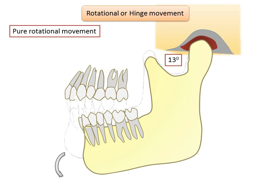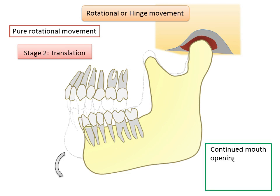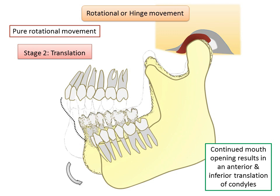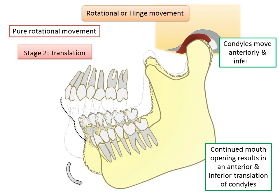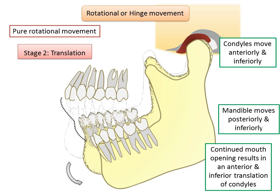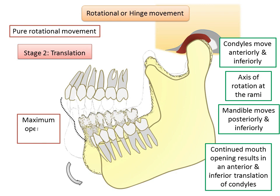In the second stage, the translational stage, the condyles translate through the axis of rotation of the mandible. During this stage, the condyles move anteriorly and inferiorly while the mandible moves posteriorly and inferiorly. The axis of rotation shifts to the bodies of rami, likely the area of attachment of the sphenomandibular ligament. Maximum opening is reached when capsular ligaments prevent further movement of the condyles, ranging between 40 to 60 millimeters.